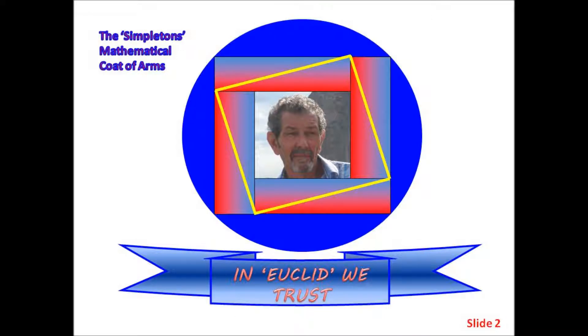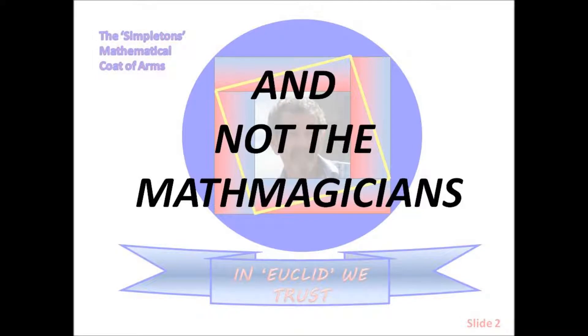Simpleton's mathematical coat of arms: in Euclid we trust and not the mathematicians.